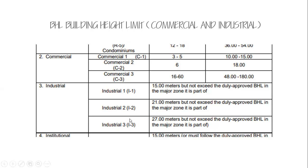Industrial 2 is for more heavy industries, allowing 21 meters but not exceeding the duly approved BHL in its major zone. Industrial 3 allows 27 meters, also not to exceed the duly approved BHL in the major zone it is part of.